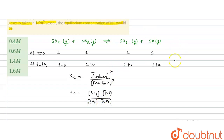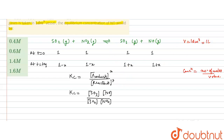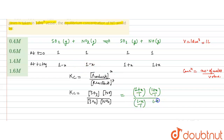Concentration is calculated as number of moles divided by volume in liters. The volume of the vessel is 1 decimeter cube, which equals 1 liter. So the concentration of SO3 is (1 + x)/1, concentration of NO is (1 + x)/1, and concentrations of SO2 and NO2 are (1 − x)/1 each. This gives us Kc = (1 + x)² / (1 − x)².